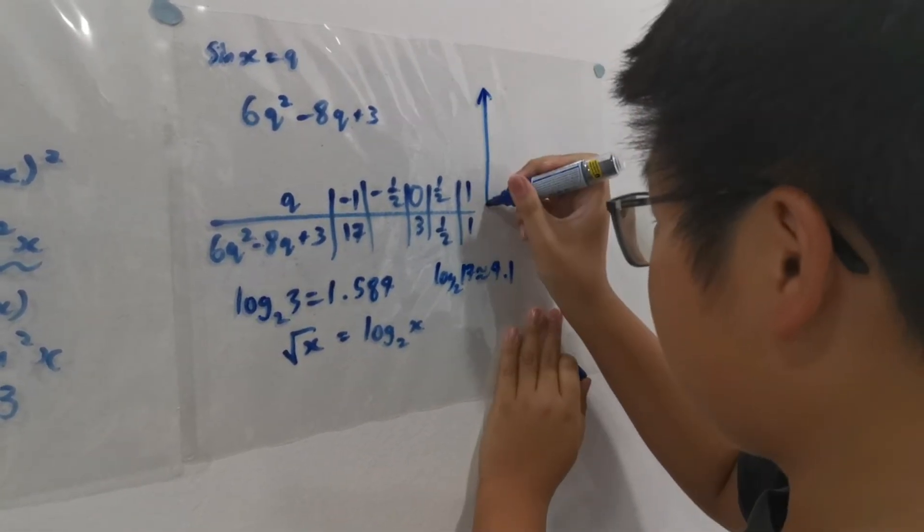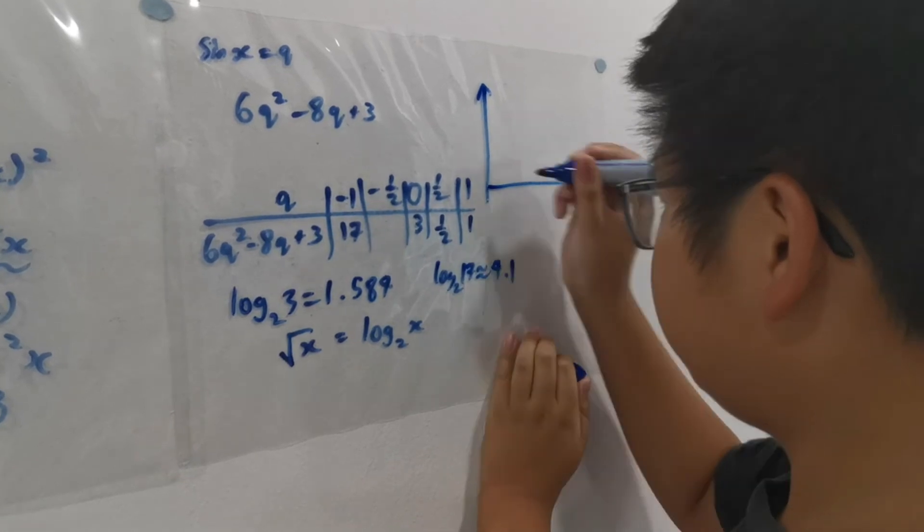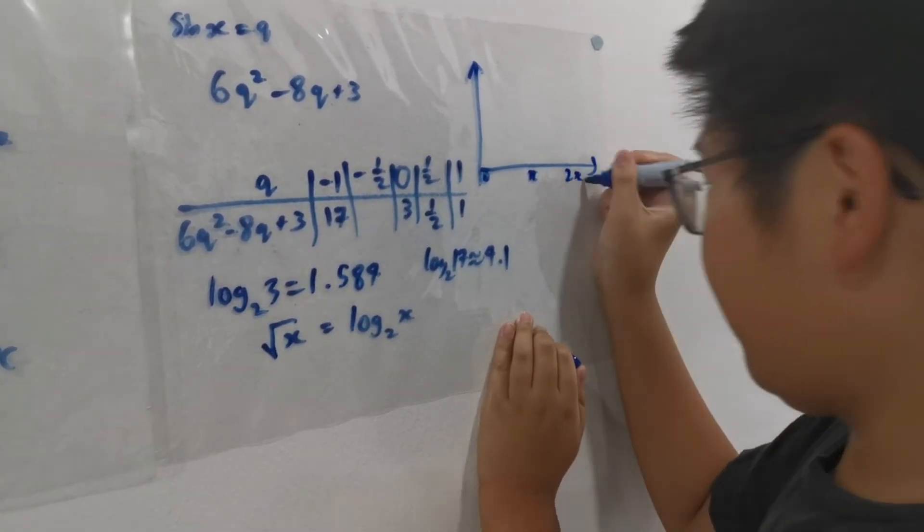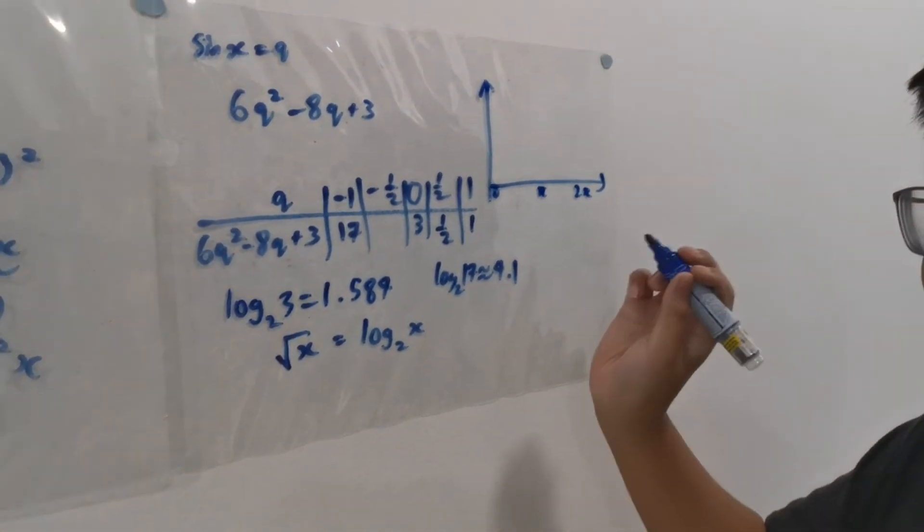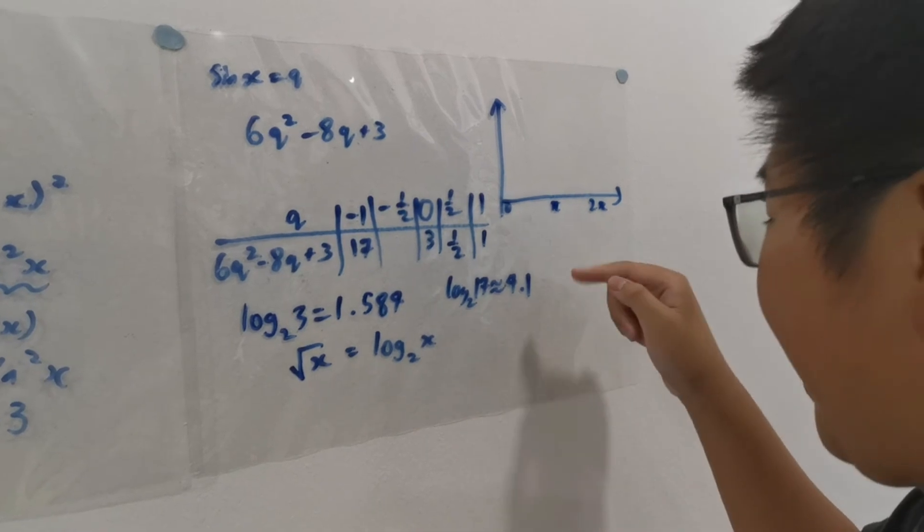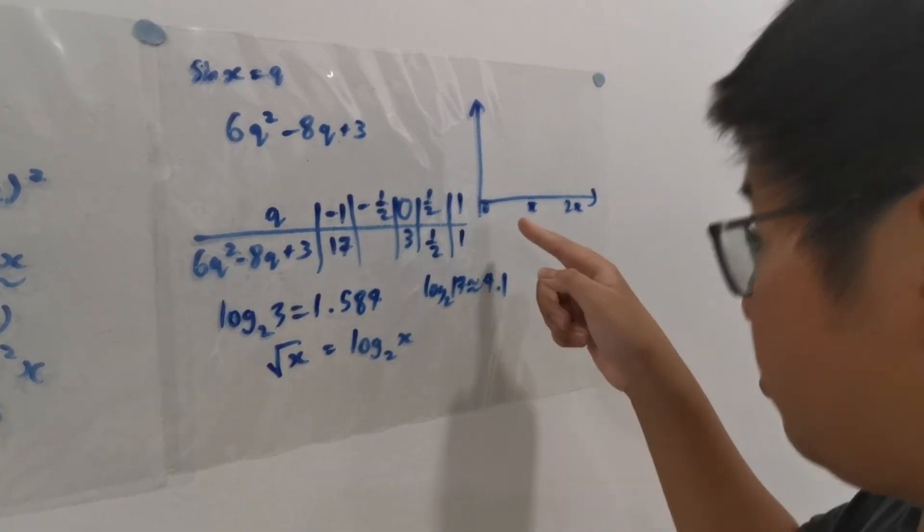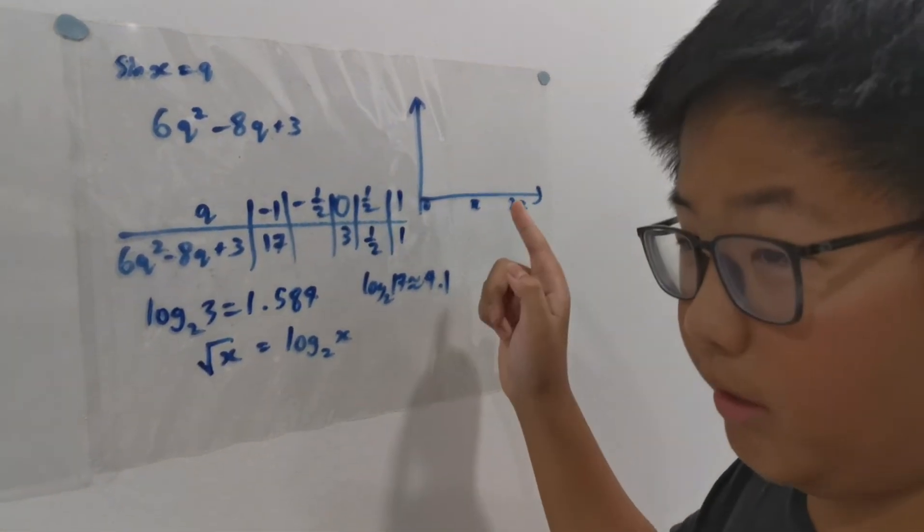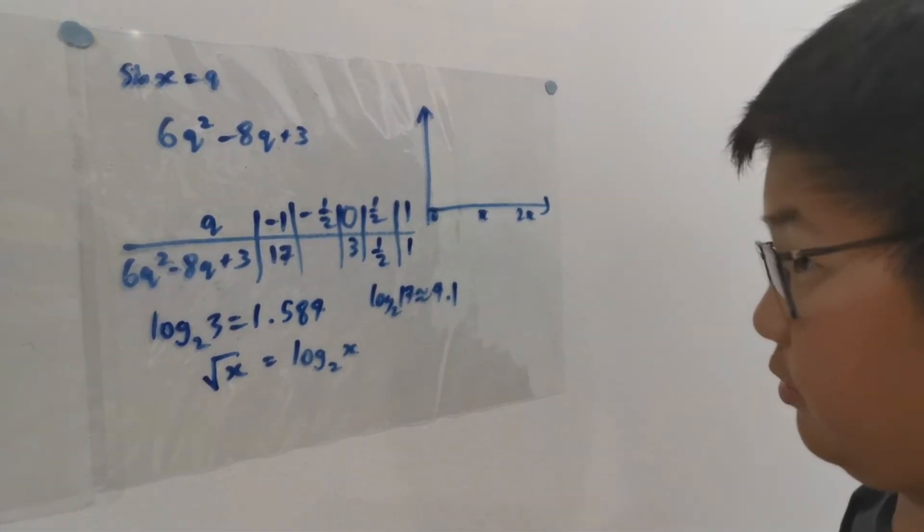Let us draw the graph here from 0 to pi and 2 pi. Sin x is 0 when x is 0, pi and 2 pi. Sin x is 1 when it is pi over 2, and sin x is minus 1 when x is 3 pi over 2.